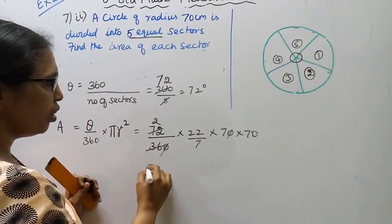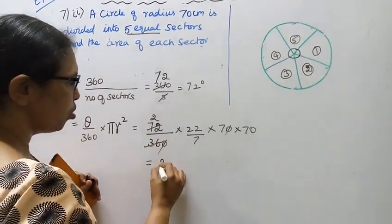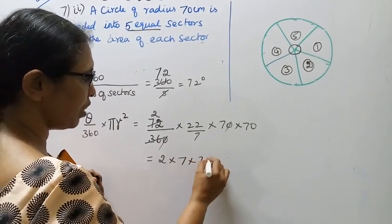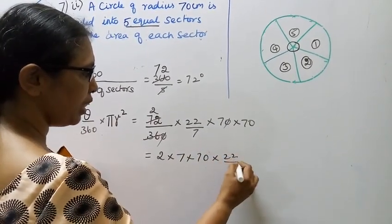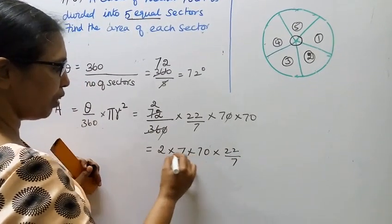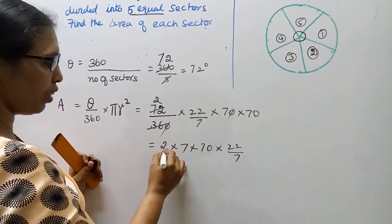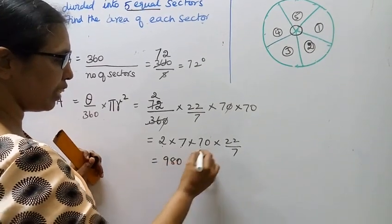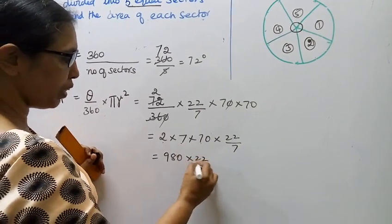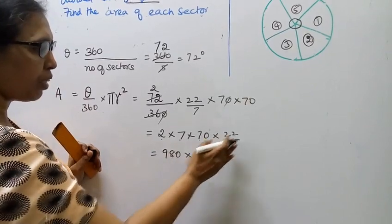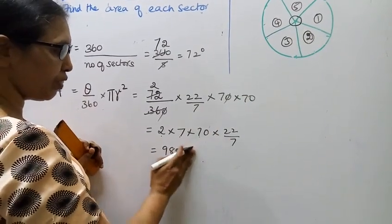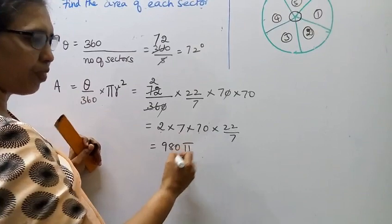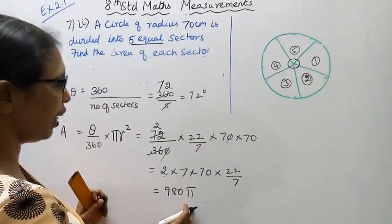Continuing the calculation: 2 × 7 × 70 × 70 × 22/7. We get 49 × 2 = 98, then 98 × 22/7, where the 7 cancels, giving us 98 × 22/7 = 14 × 22 = 308. So the area of the sector is computed using 22/7.